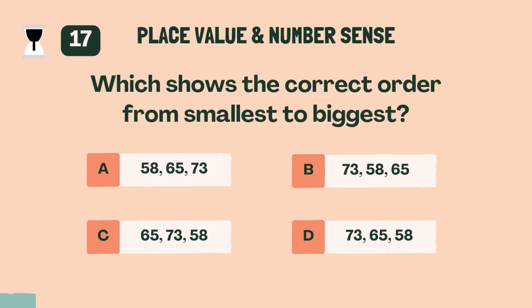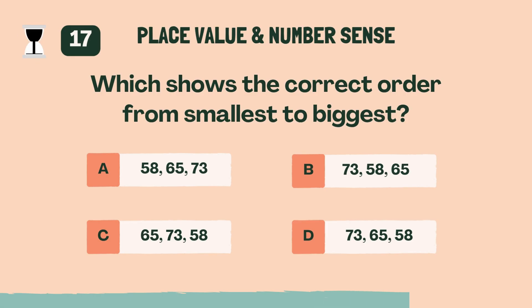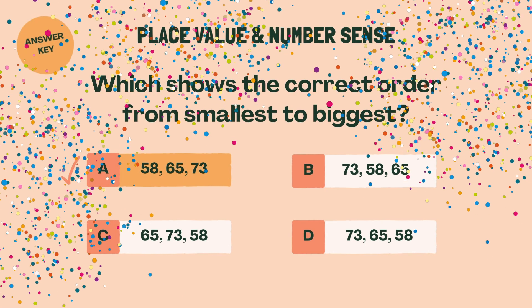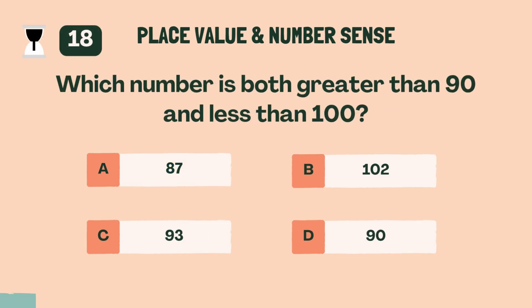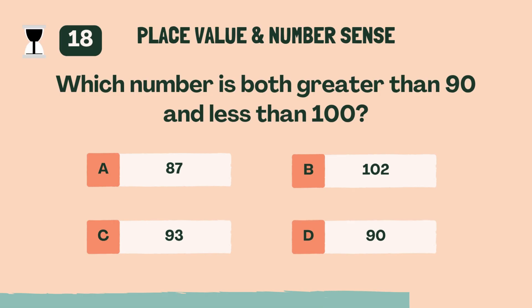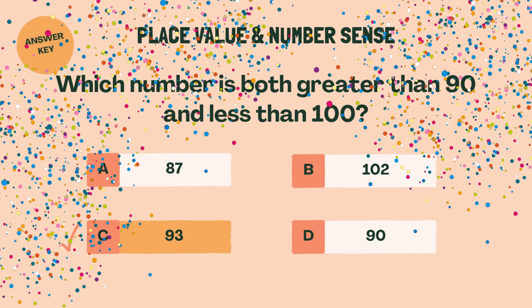Which shows the correct order from smallest to biggest? A, 58, 65, 73. Which number is both greater than 90 and less than 100? C, 93.